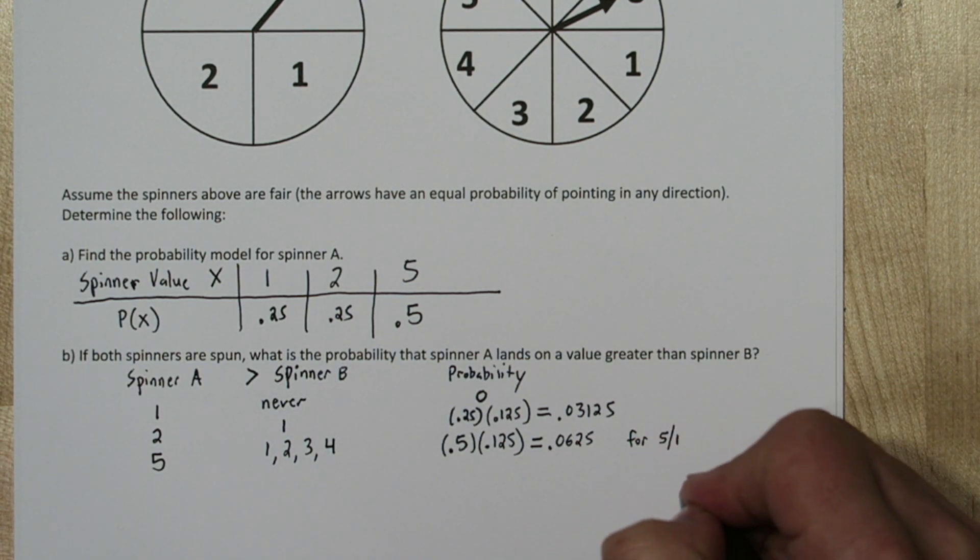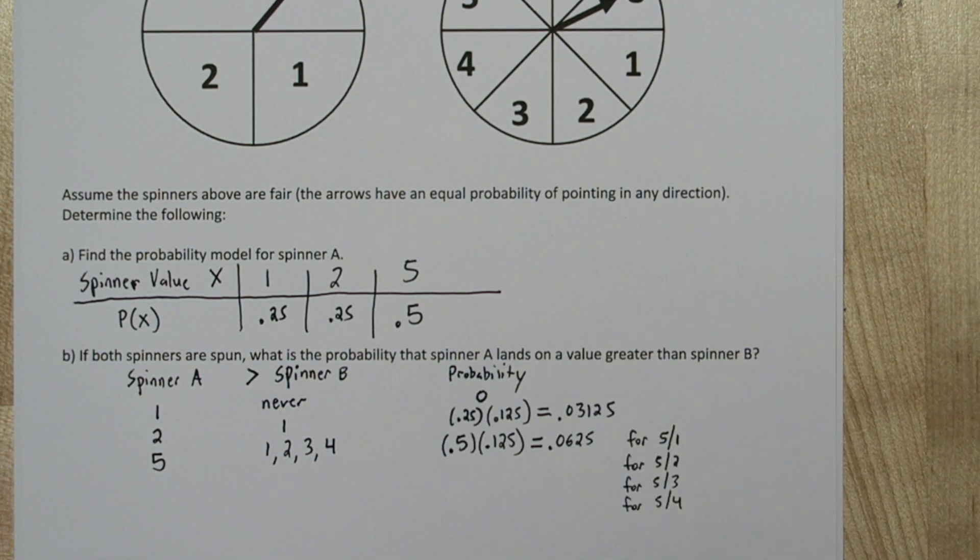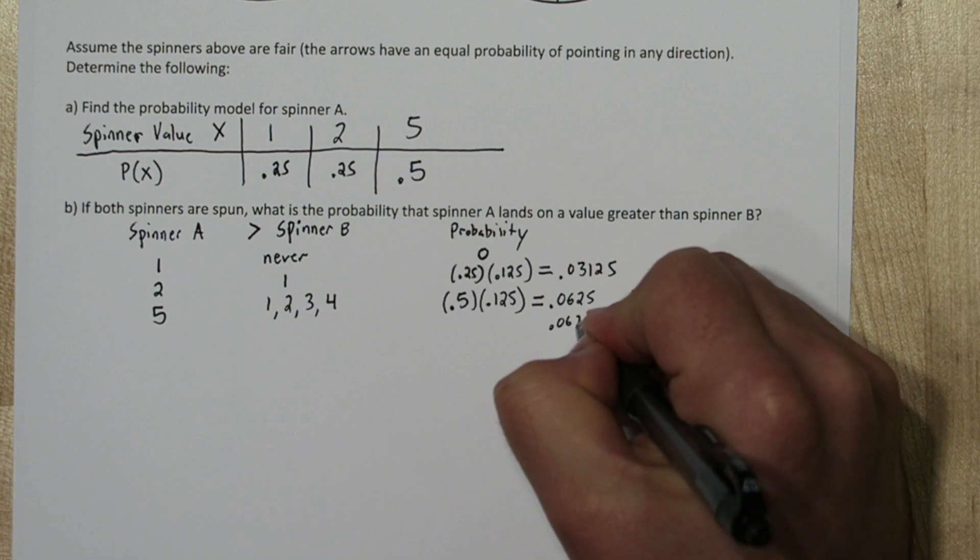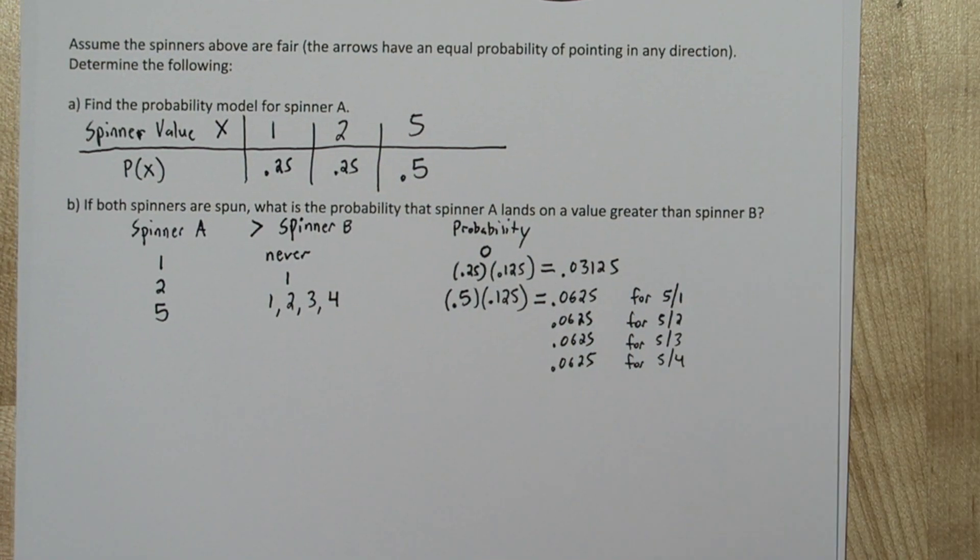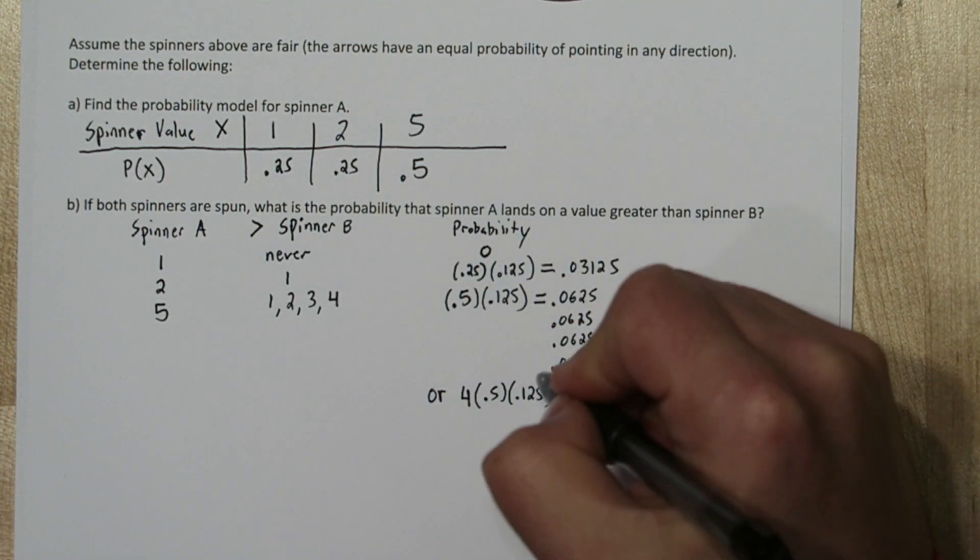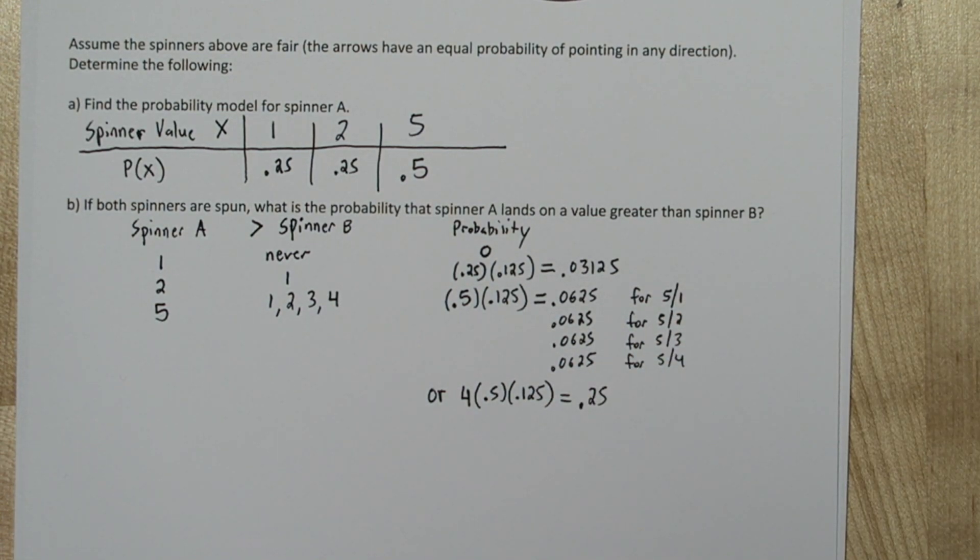Now since the probability of getting a 5 for spinner A and a 1 for spinner B is the same as getting a 5 for spinner A and a 2, 3, or 4 for spinner B, we can just copy the probability we got for the 5, 1 scenario, or we can just multiply it by 4. It turns out the probability of getting a 5 on spinner A and then a 1, 2, 3, or 4 on spinner B is 0.25.